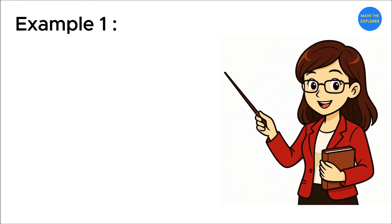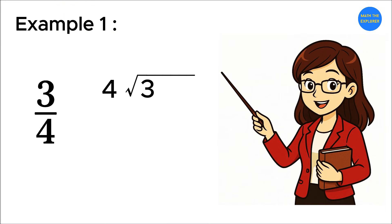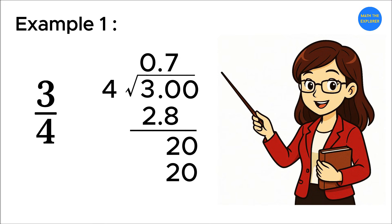Let's start with three-fourths. To convert, we divide three by four. Four goes into three zero times, so we write zero point. Add a zero. Now it's thirty divided by four. That gives us seven, remainder two. Bring down another zero. Twenty divided by four is five. No remainder! So three-fourths is equal to zero point seven five. Super simple, right?